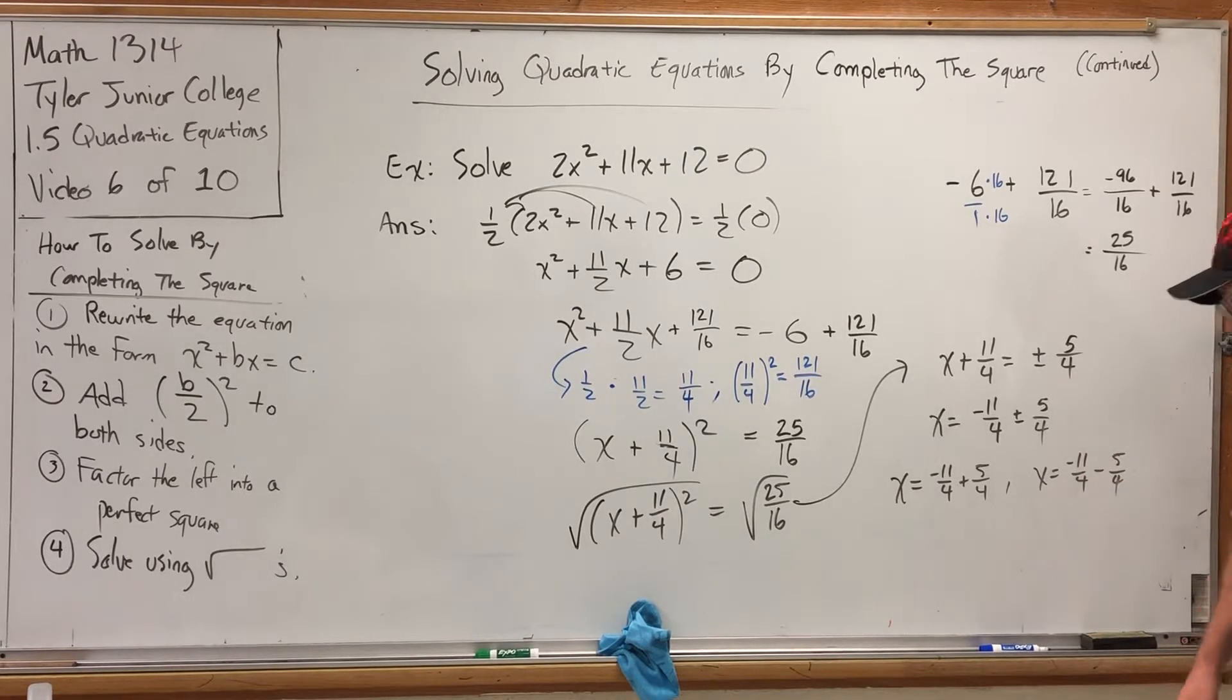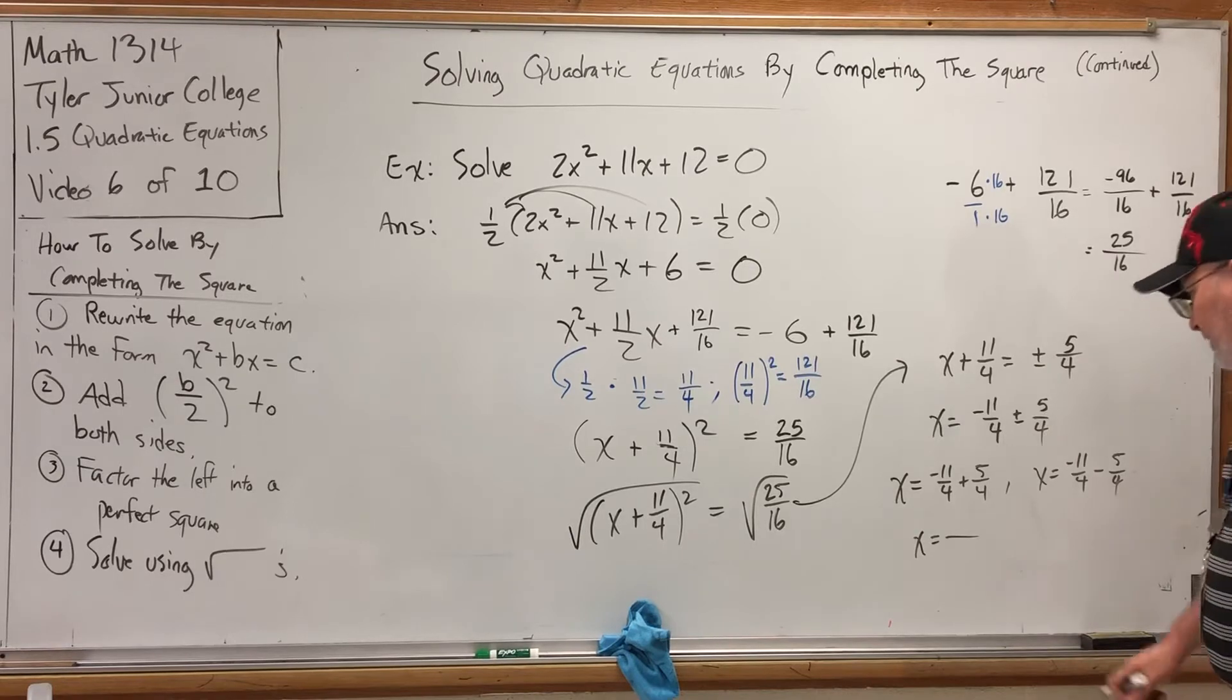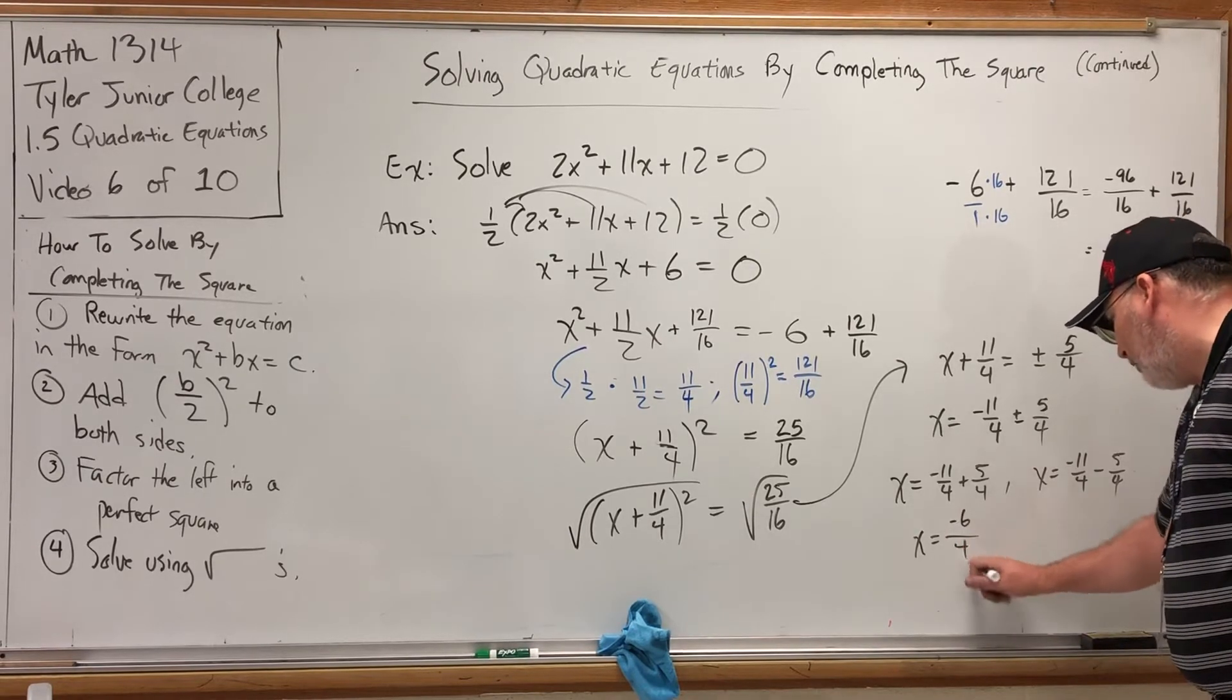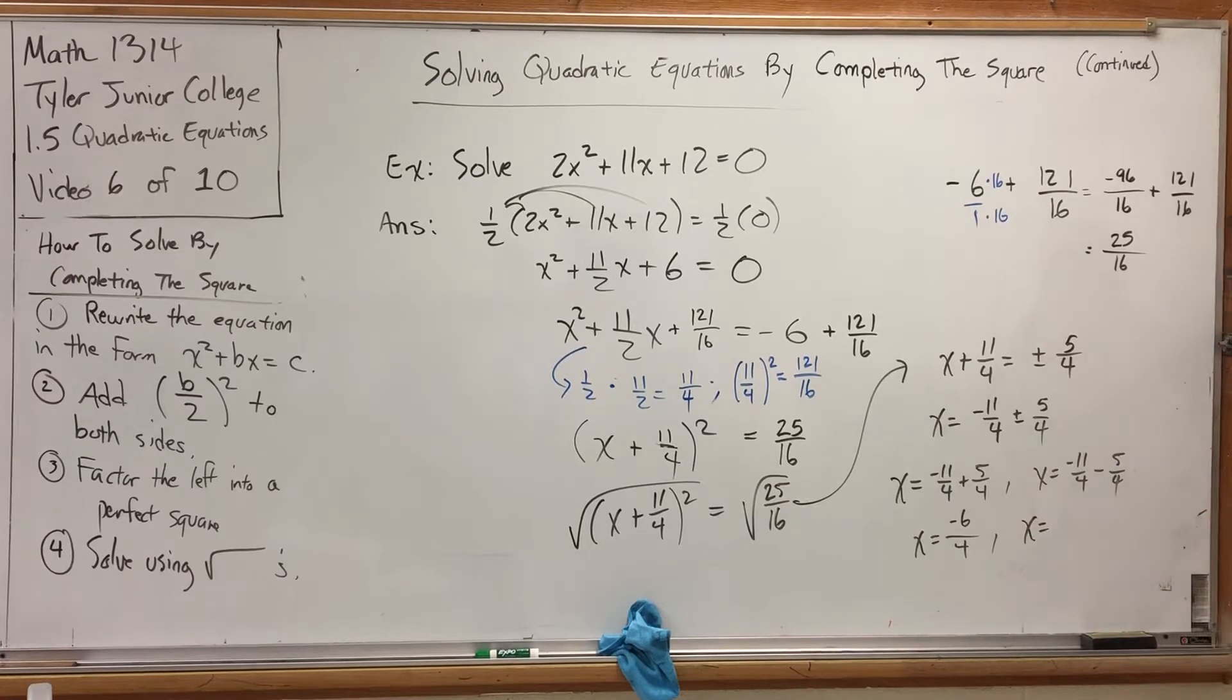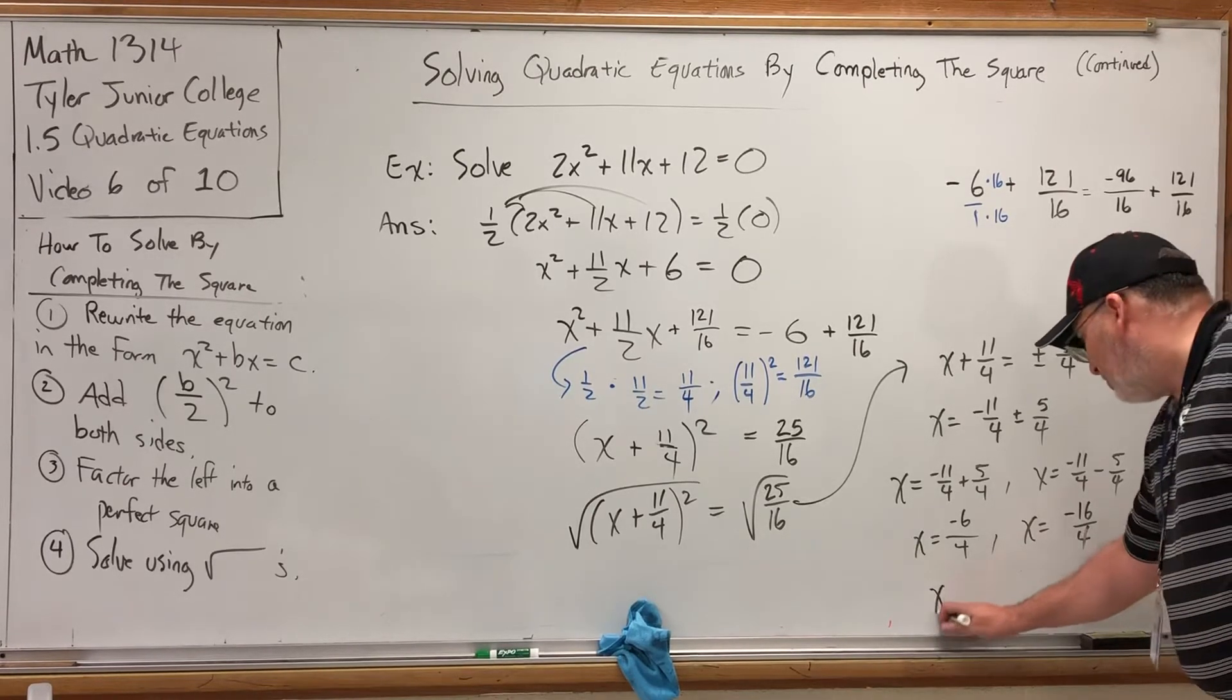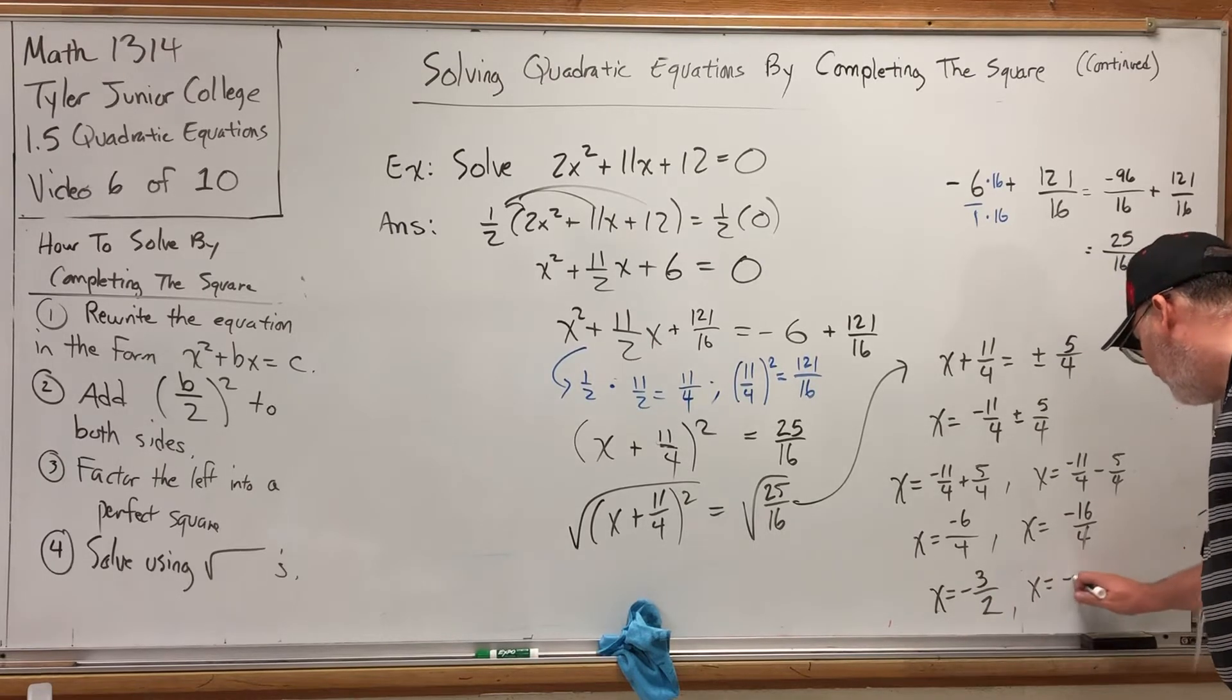Great, now I have to add the fractions, but at least they already have common denominators. Negative 11 fourths plus 5 fourths is negative 6 fourths, that's screaming to be reduced, and negative 11 fourths minus 5 fourths is negative 16 fourths. That's screaming to be divided out completely. One solution is negative 3 halves, and the other solution is just negative 4.